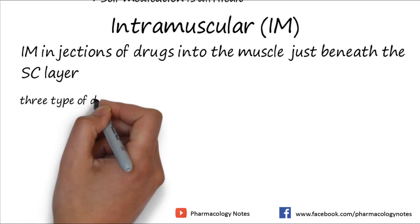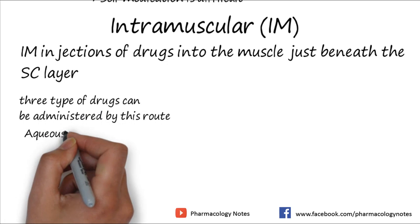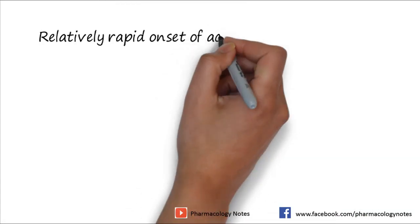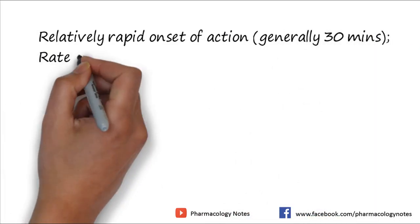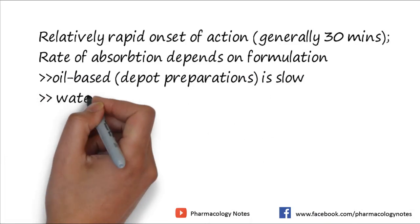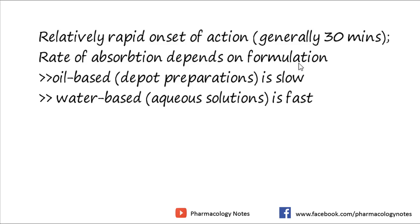The intramuscular (IM) route involves injection of the drug into the muscle, just beneath the subcutaneous layer. Three types of drug formulations can be administered: aqueous solutions, oily solutions, and suspensions. IM injection has a relatively rapid onset of action, generally starting around 30 minutes. The rate of absorption depends on the formulation — oil-based preparations, also called depot preparations, result in slow absorption, while water-based or aqueous solutions result in faster absorption.